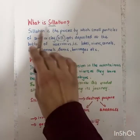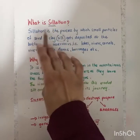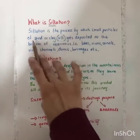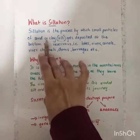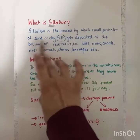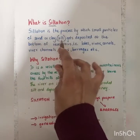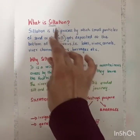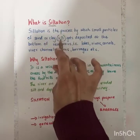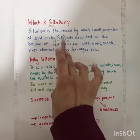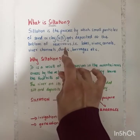Now let's look at what is siltation. Siltation is the process by which small particles of sand or clay — and these small particles of sand or clay are basically silt, that's where you get this word — are deposited at the bottom of the reservoirs.